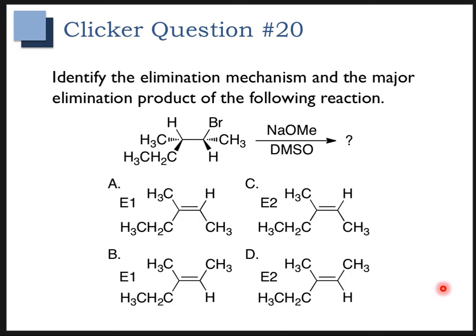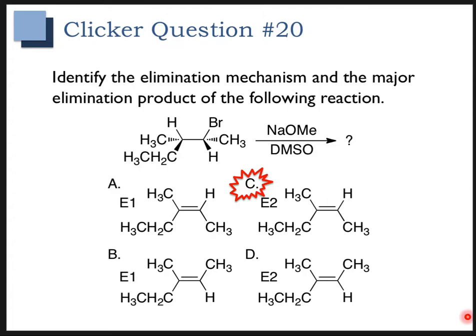Here's another iClicker question. Keep in mind that depending on the mechanism, you may have to draw a Newman projection to figure out the product of this reaction. Hopefully you correctly identified answer C. Notice that you have a strong base and a polar aprotic solvent, so this is going to be an E2 mechanism. In an E2 mechanism, the bromine and the beta hydrogen that are leaving have to be anti to each other, so we have to draw the Newman projection.